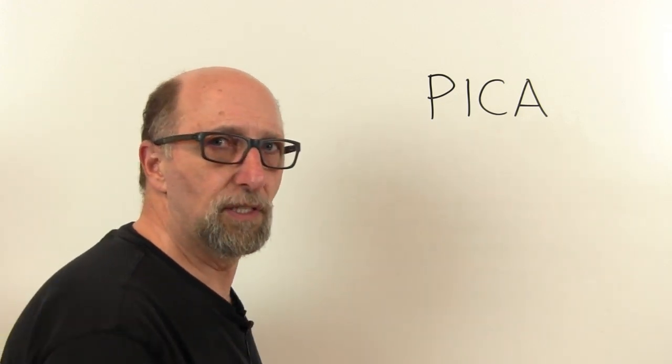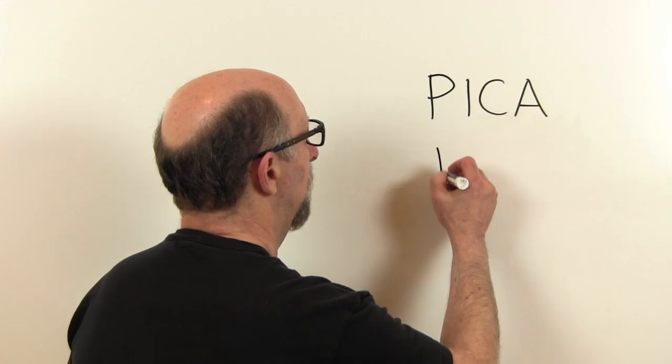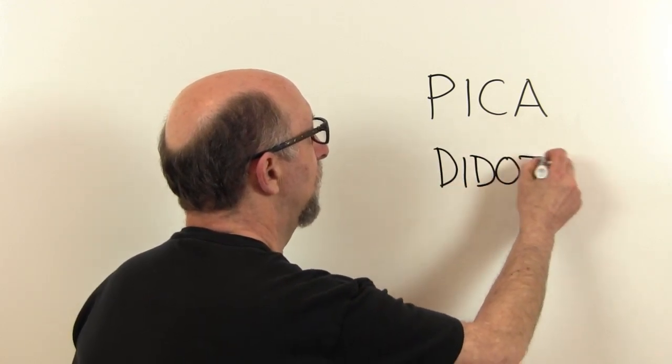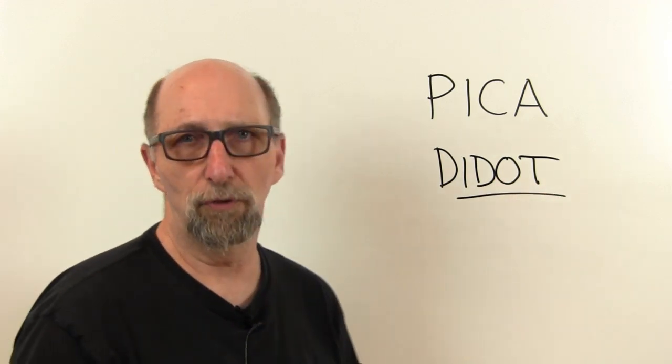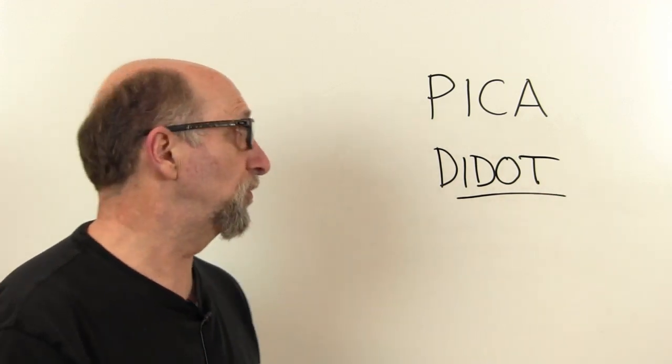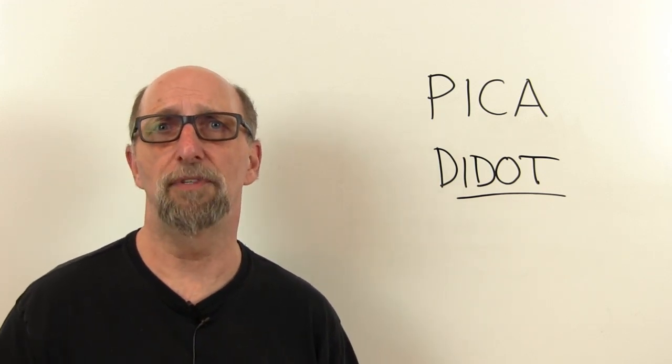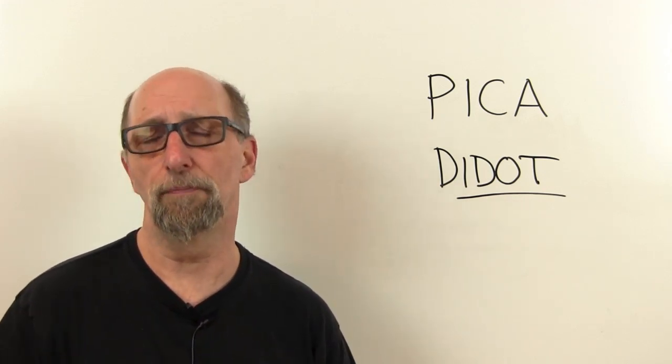Obviously that wouldn't work very well today where we have computers and you can generate any size you want. So in the 18th century, a type designer named Didot invented the point system, which is the origin of the Pica. His name was Didot, and if you look at type catalogs, you'll eventually run into his name because you'll see some very beautiful modern typefaces known as Didot, and there's a whole bunch of them.